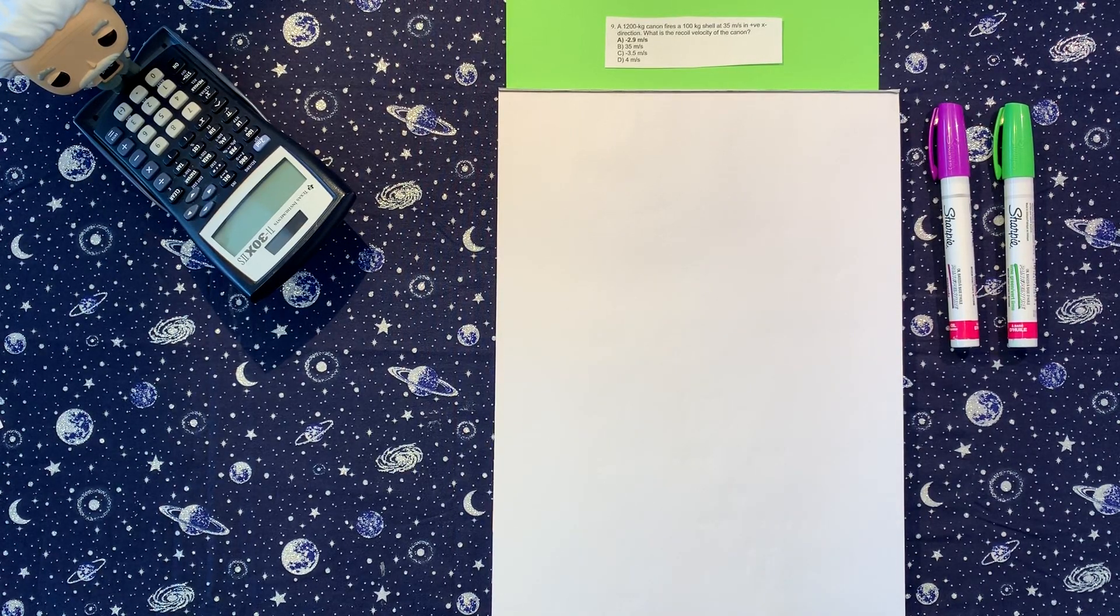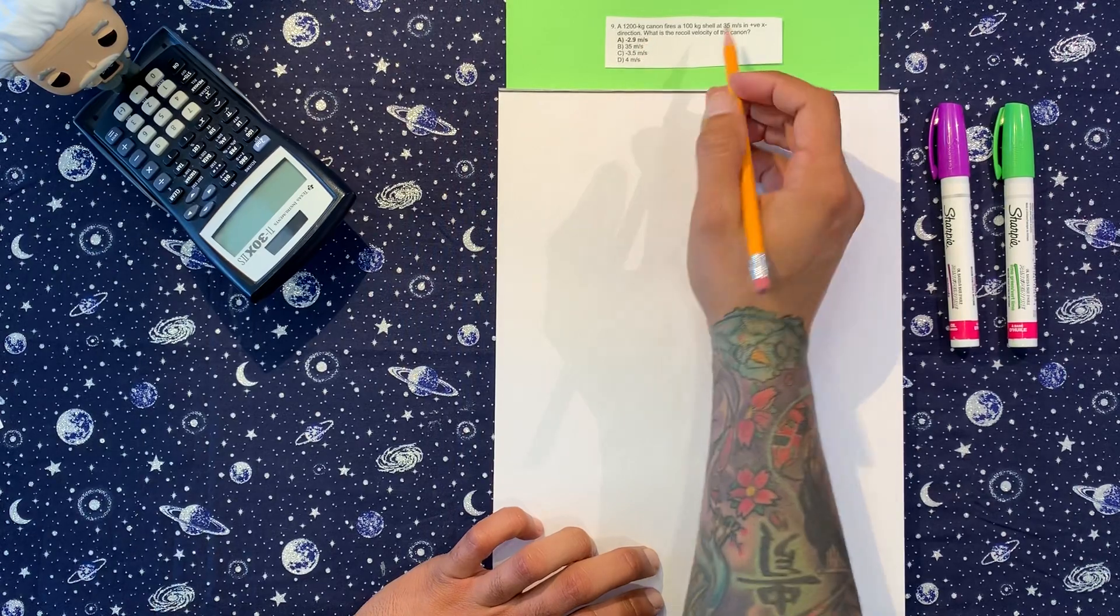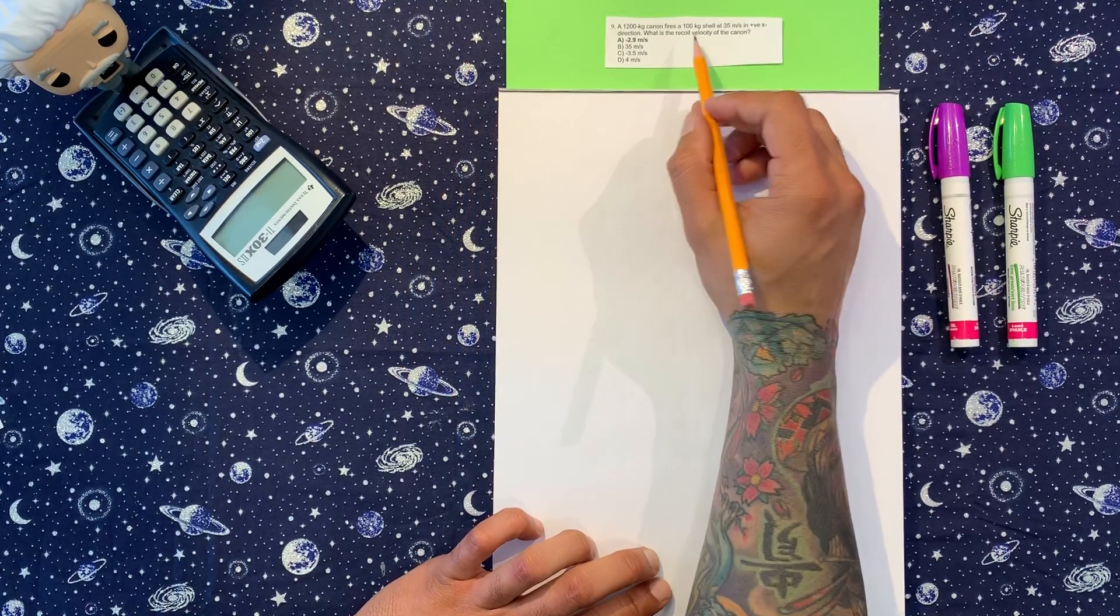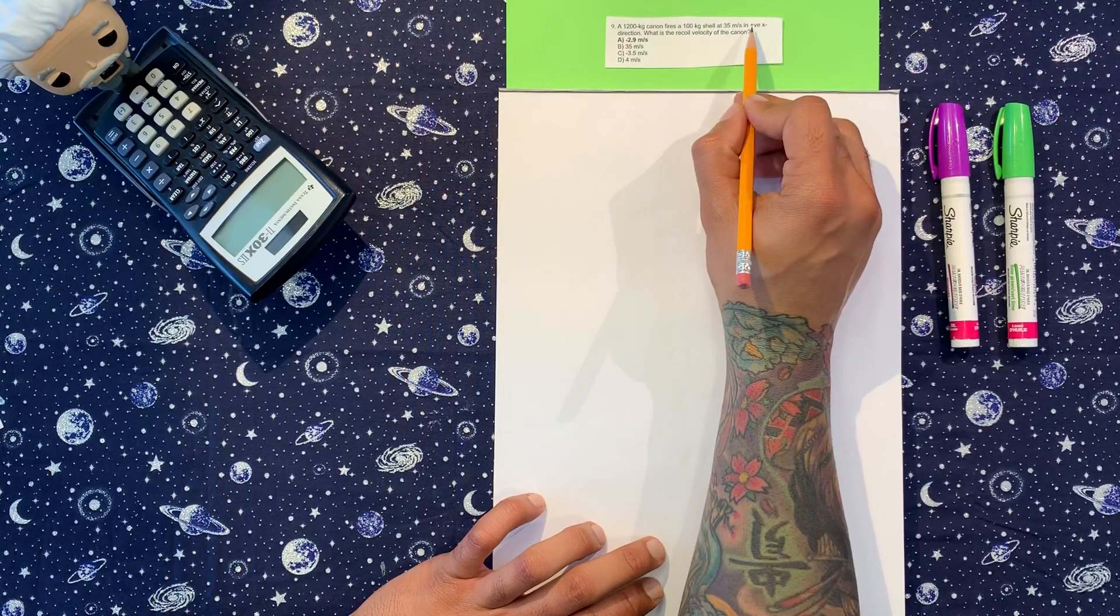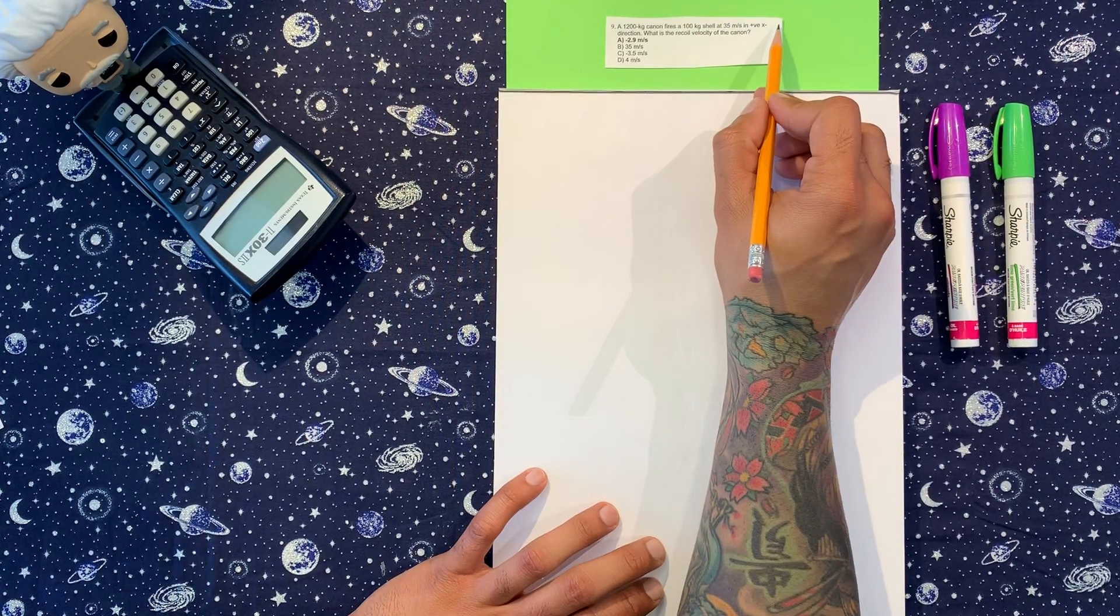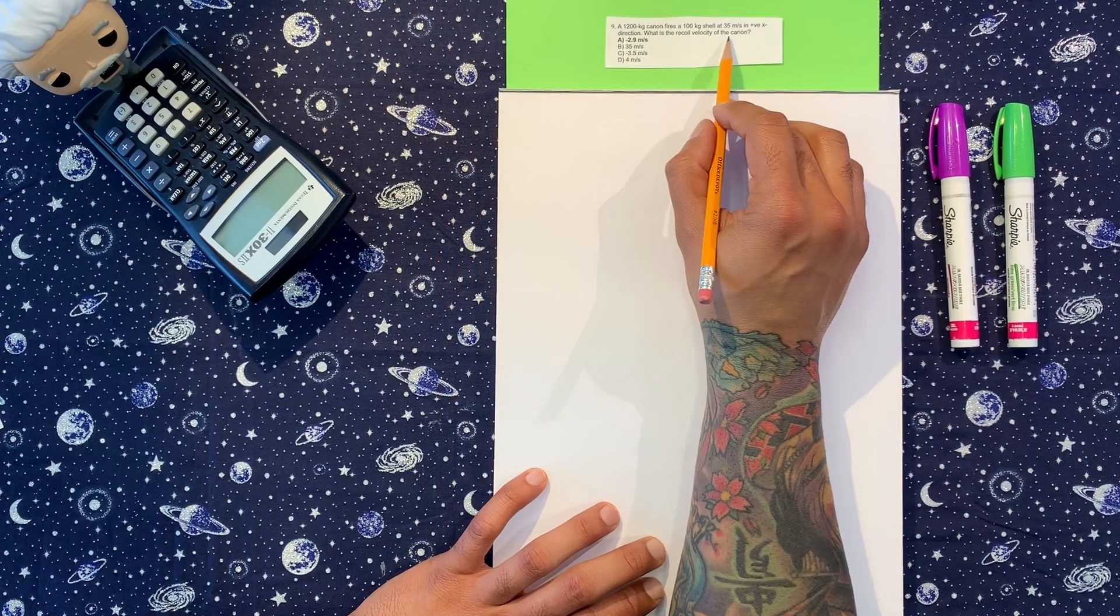All right, another momentum problem. We have a 1,200 kilogram cannon fires a 100 kilogram shell at 35 meters per second in the positive x direction. What is the recoil velocity of the cannon?